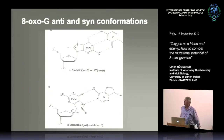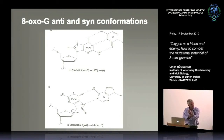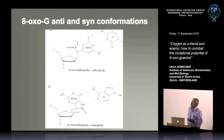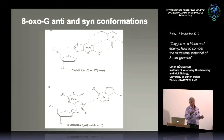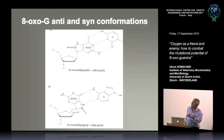Coming back to the 8-oxoG problem: at the replication fork, faithful polymerases with a tightly closed active site make an induced fit upon proper nucleotide incorporation and cannot accommodate the 8-oxoG Hoogsteen geometry. Translesion polymerases like pol lambda, whose structure we knew, have a more open active site where even two nucleotides can enter, and they do not close upon nucleotide binding. The idea is that 8-oxoG may adopt a syn/anti conformation change and thereby base-pair with C.